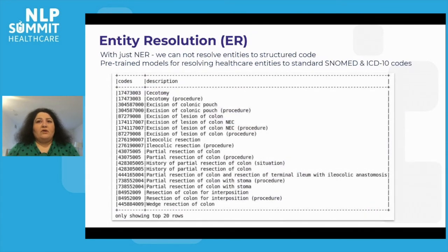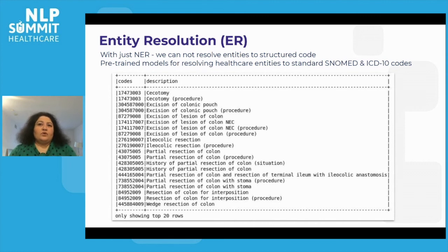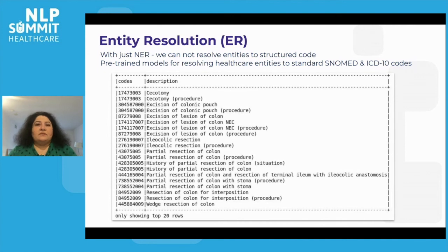With just NER and OCR, we cannot fully structure unstructured text. Entity resolution means removing duplicates, normalizing data, and disambiguating records that correspond to real-world entities across and within datasets. We have been looking into approaches that combine clinical embeddings and named entity resolution to pick appropriate terminology concepts. Entity resolution models are per-terminology ontologies like ICD-10, RxNorm, and SNOMED.